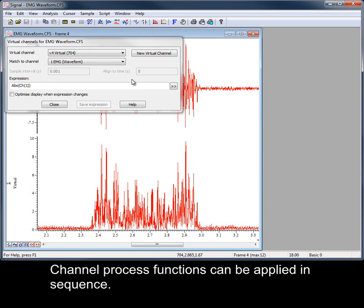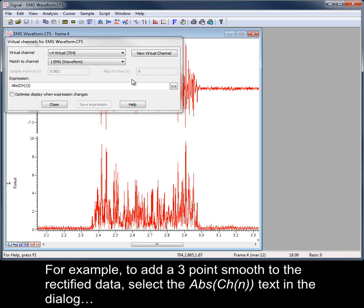Channel process functions can be applied in sequence. For example, to add a three-point smooth to the rectified data, select the expression text in the dialog.